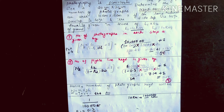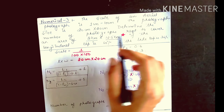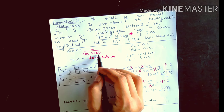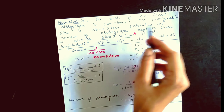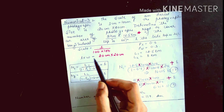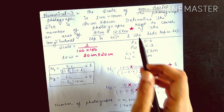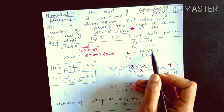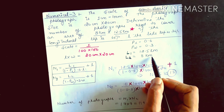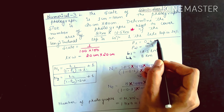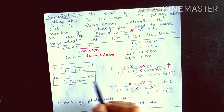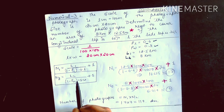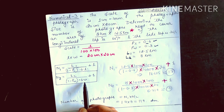Let us take another example — numerical 3. The scale of an aerial photograph is 1cm = 100m, giving scale 1:10,000. The photograph size is 20cm × 20cm (small l, small w). Determine the number of photographs required to cover an area of 8 km × 12.5 km, where L1 = 12.5 km and L2 = 8 km. Longitudinal overlap PL = 60% (0.6), side overlap PW = 30% (0.3).